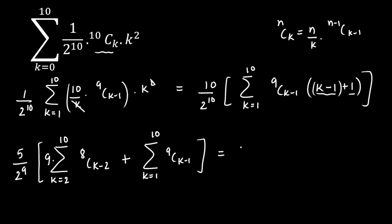Now let us write the full sum. We get (5/2^9) times the result. The first summation — 8C0 + 8C1 + 8C2 + ... — equals 2^8. The second summation — 9C0 + 9C1 + ... + 9C9 — equals 2^9. These are just sums of all binomial coefficients for n=8 and n=9 respectively.